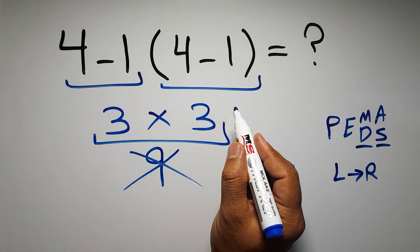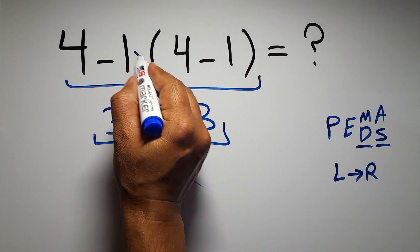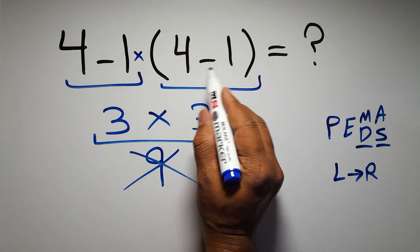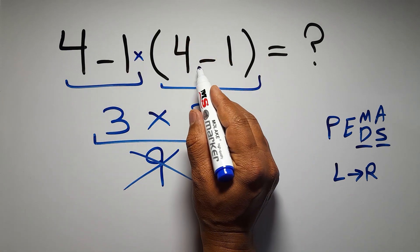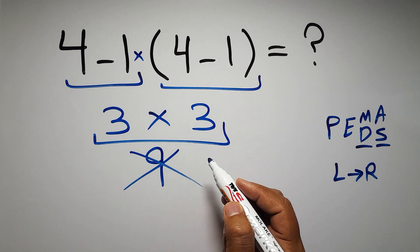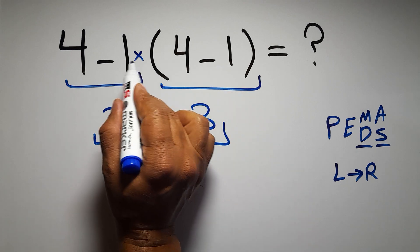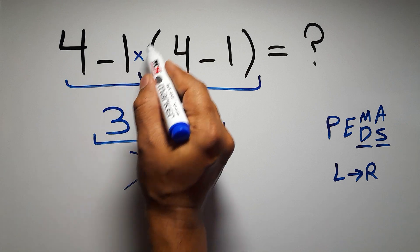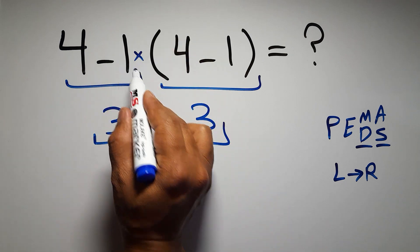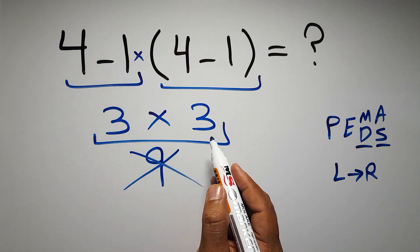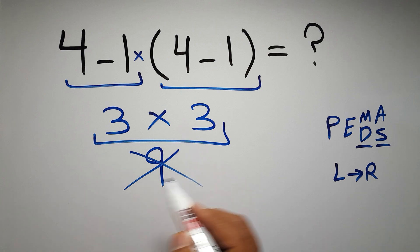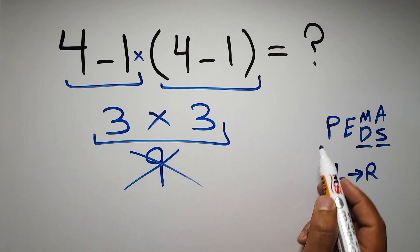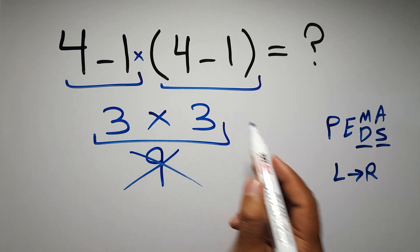In this expression we have one subtraction, one multiplication, and one set of parentheses. Inside these parentheses we have one subtraction. Here we have a multiplication because in mathematics when a number is placed next to parentheses it means multiplication — we usually don't write the multiplication sign for brevity. So according to PEMDAS, first we have to